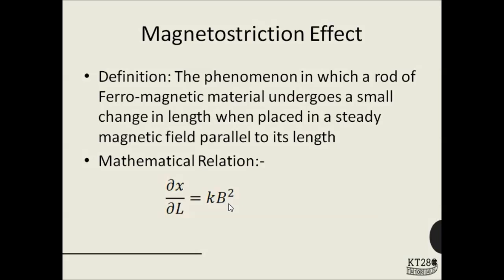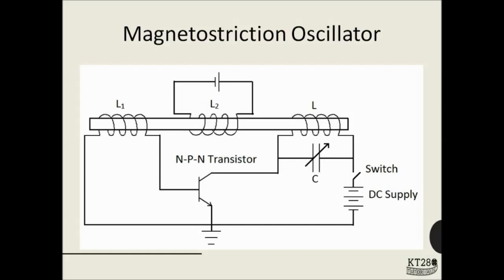This is what we are going to use for the production of ultrasonic waves. This is the circuit diagram for a magnetostriction oscillator. In many textbooks they don't include this part of the circuit, but referring to university-recommended textbooks I have included it. This is the tank circuit. This is the feedback coil and this is the NPN transistor which will be used for amplification of the signal.